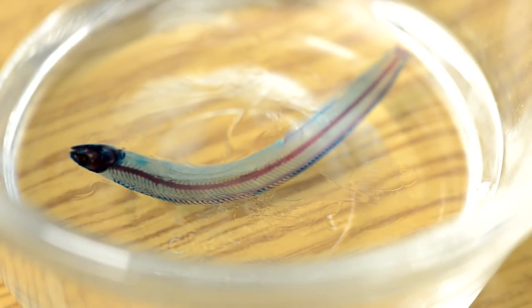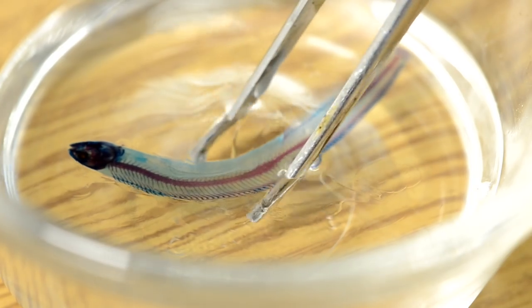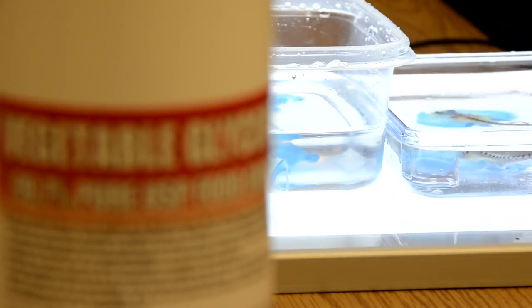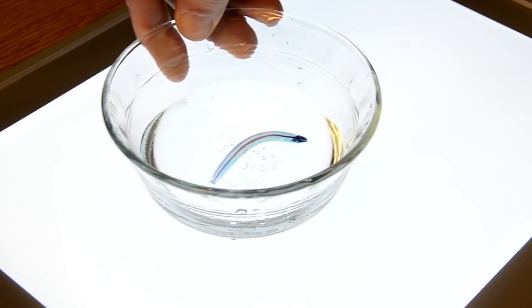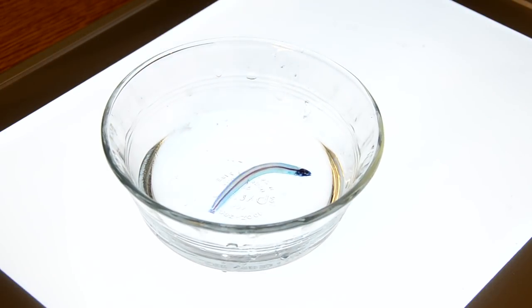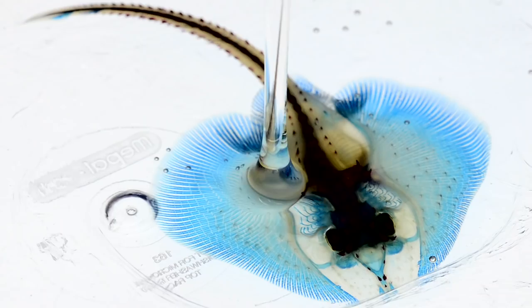Collagen, the stuff that's in your skin, holds the fish together. Then a little bit of bleach gets rid of the dark colors and you're left with a white fish. Collagen has the same index of refraction as glycerin, and by putting it in glycerin the entire fish becomes transparent with this beautiful pattern.